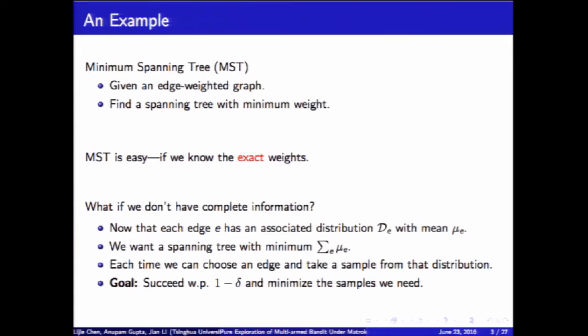Let us begin with an interesting example. We all know minimum spanning tree is a very easy problem, but it's easy as long as we know the exact weights. What if we don't have complete information? For example, say now that each edge has an associated distribution with mean mu_e, and we want a spanning tree with minimum utility. Each time we can choose an edge and take a sample from it. The goal is to succeed with probability 1-minus-delta and minimize the samples we need.